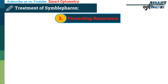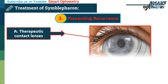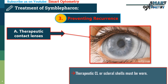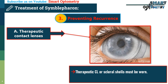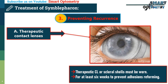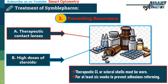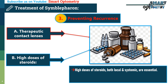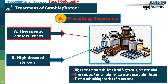3. Preventing recurrence of adhesions: a. Therapeutic contact lenses or scleral shells must be worn for at least 6 weeks after treatment to prevent adhesions from reforming. b. High doses of steroids, both local and systemic, are essential. These reduce the formation of excessive granulation tissue, further minimizing the risk of recurrence.